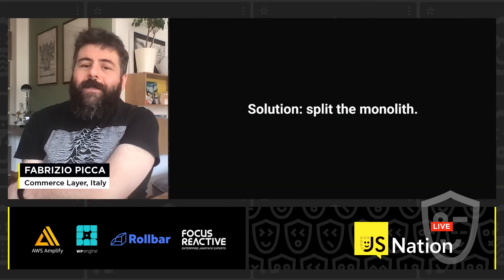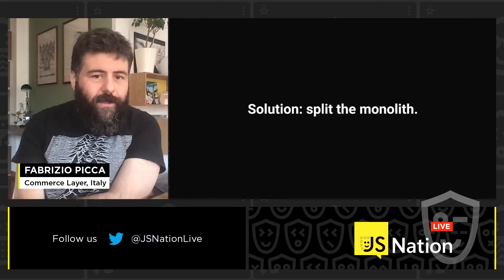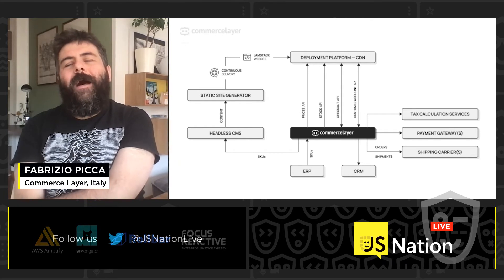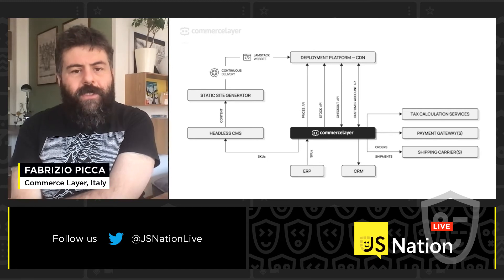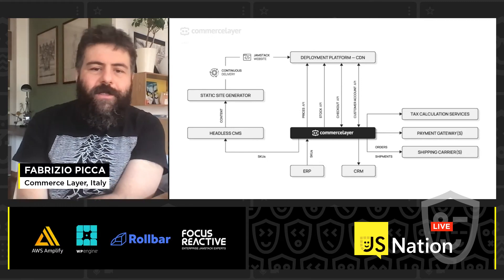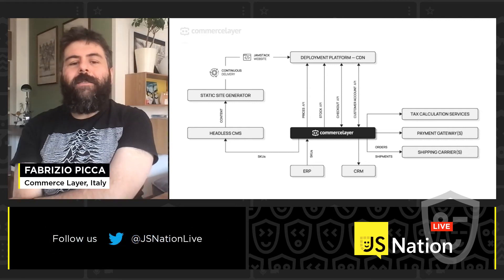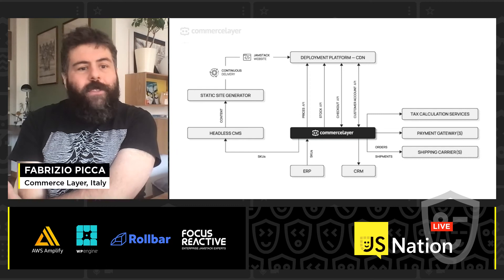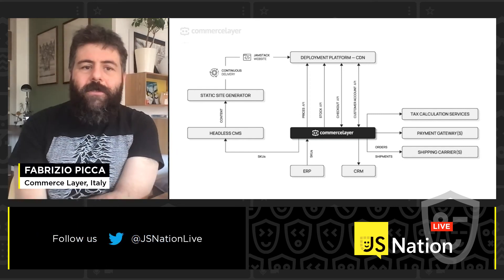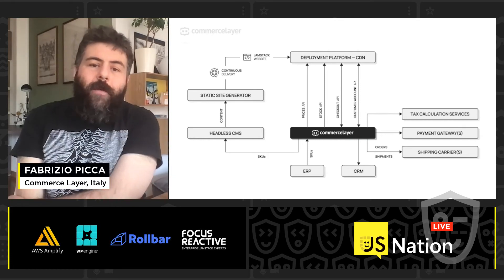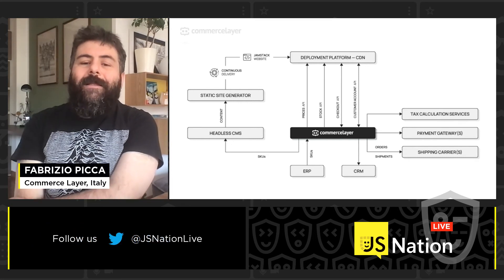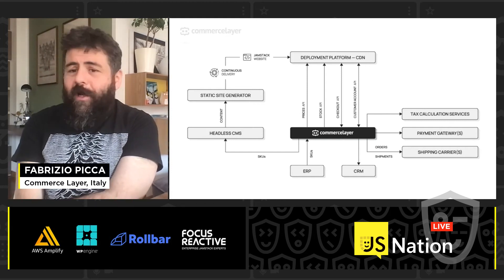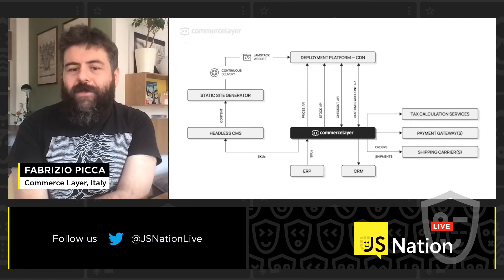So what is the solution? The solution is to work on architectures that are modular — splitting the monolith. For example, a modular architecture based on Commerce Layer would have Commerce Layer as the transactional engine, managing prices, stock information, checkout APIs, and customer account APIs. Around Commerce Layer, you integrate all the different services needed: a headless CMS, a static site generator, a deployment platform to optimize performance, tax calculation services, payment gateways, shipping carriers, and legacy systems like the CRM and ERP.